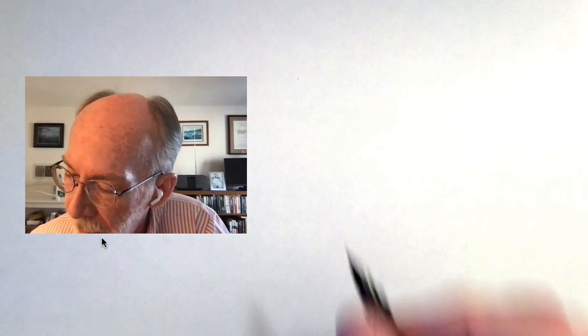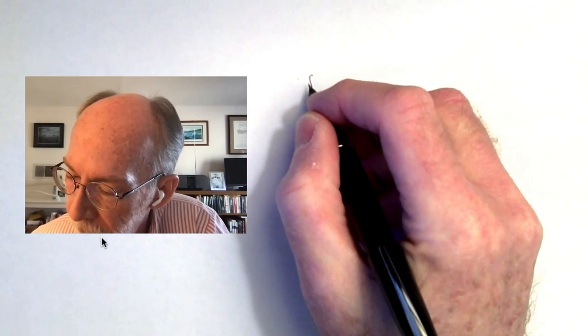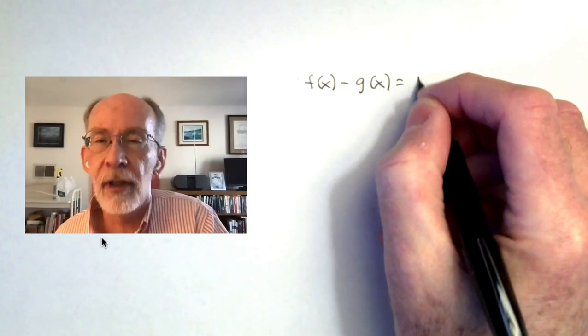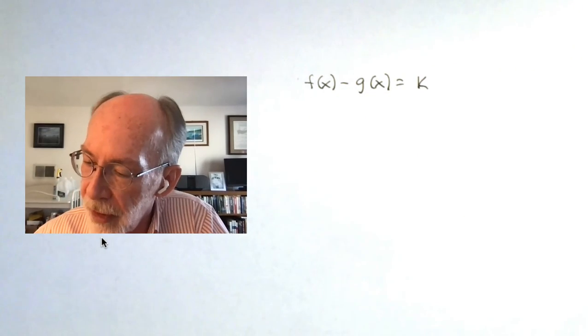So let's imagine that we have two functions that differ by a constant. We can call them f and g. And so f minus g equals some constant k.